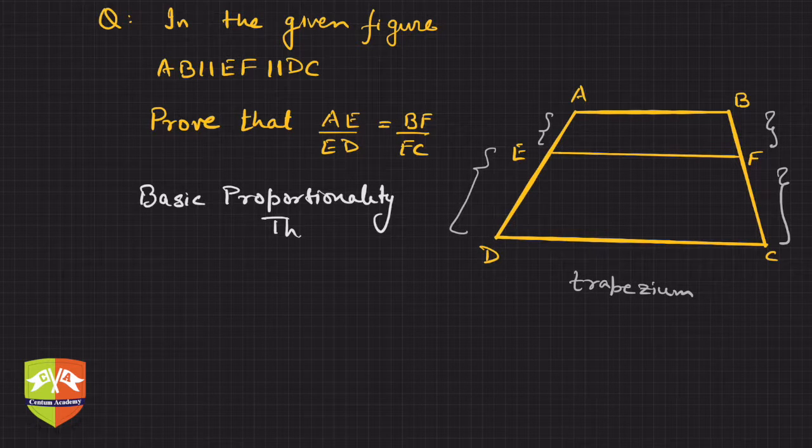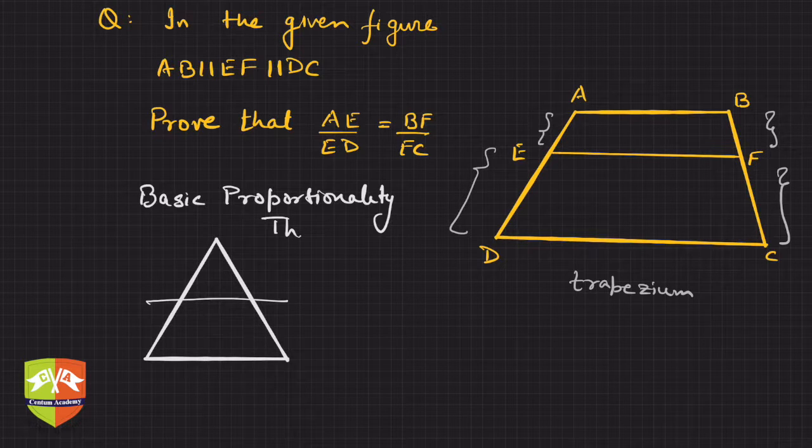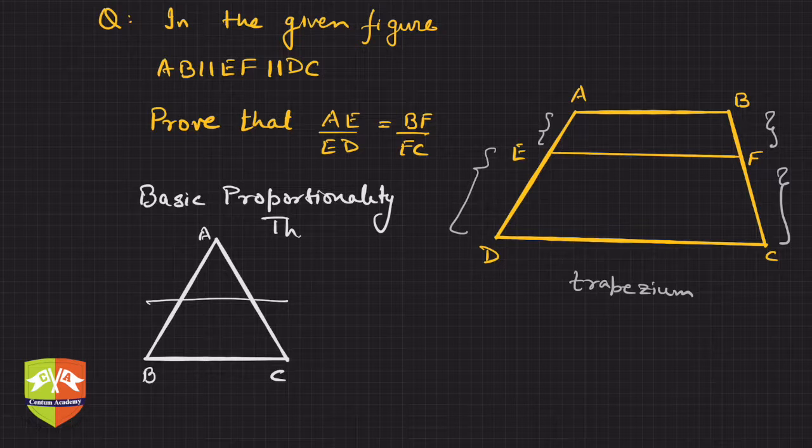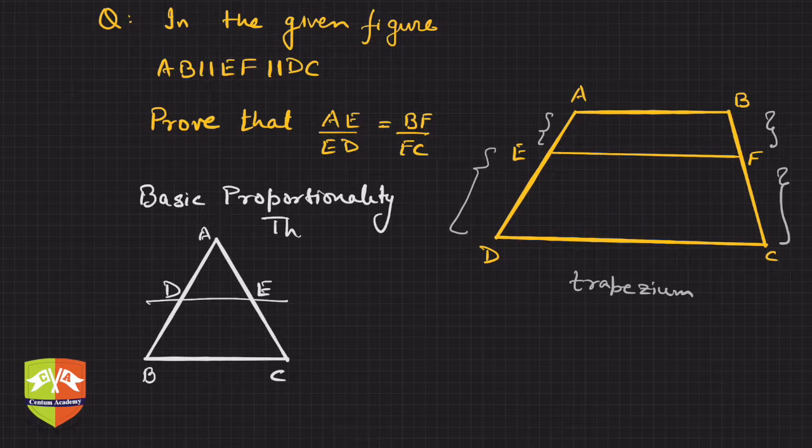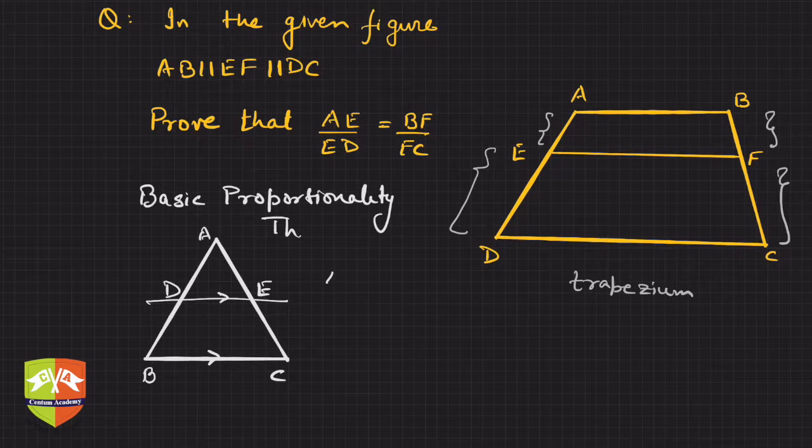In a triangle, what does it say? So if you have a triangle like that and you have a line parallel to one of the sides, let's say this is ABC and this is D and E.